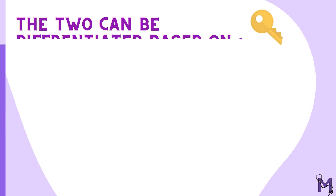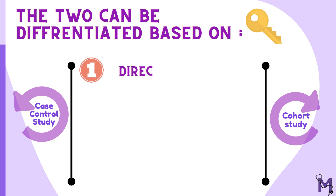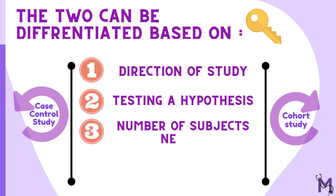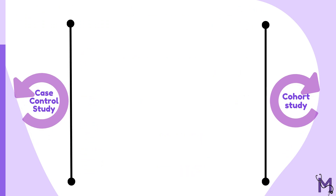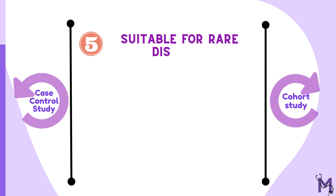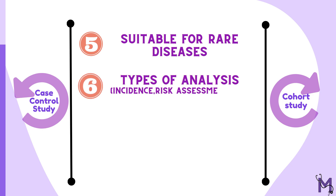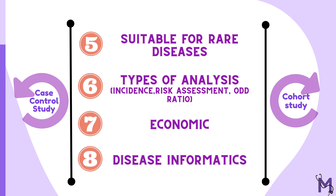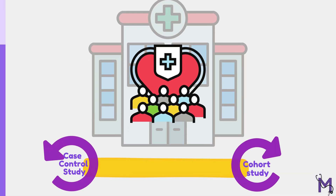To recap, the eight headings under which we can differentiate the two are: first, the direction of the study; second, the hypothesis; third, the number of subjects needed; fourth, the time taken to get results; fifth, suitability for rare diseases; sixth, the types of analysis; seventh, the economic factor; and eighth, how many diseases we can get information about through each study.